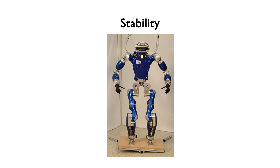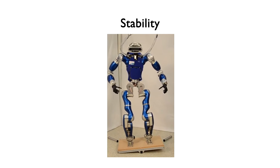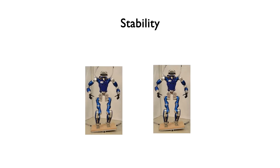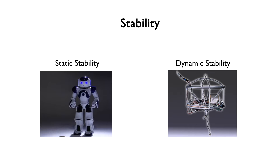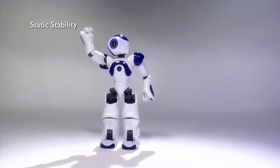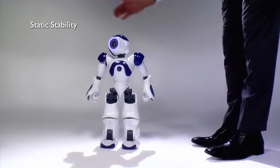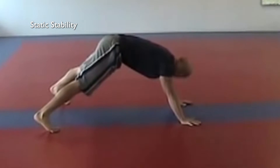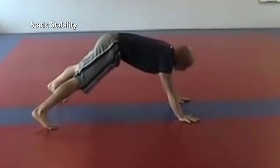Stability is a very important criteria in robot design. A robot should not overturn in any condition unless it is an intended action. Stability can be divided into static stability and dynamic stability. To be statically stable means that a robot can maintain its balance when it is not in motion — in other words, it can stand still without falling over. Imagine that you are on all fours on the ground; in this position you are statically stable.